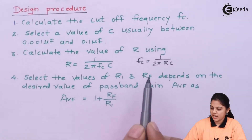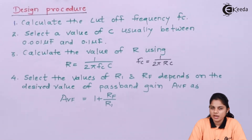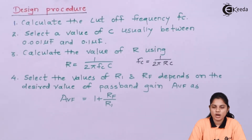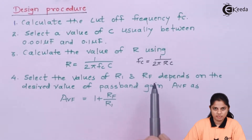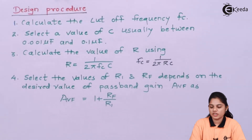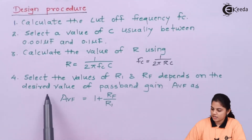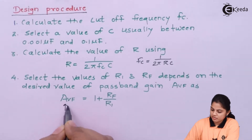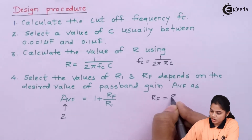Fourth, select the values of R1 and RF. R1 is the input resistance connected to the inverting terminal, and RF is the feedback resistance connected between the inverting terminal and the output voltage. This decides the gain of the amplifier. For a low-pass Butterworth filter in a non-inverting configuration, the closed-loop gain is AVF = 1 + RF/R1. R1 and RF depend on the desired passband gain.